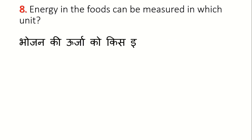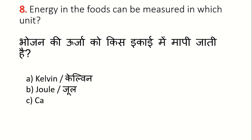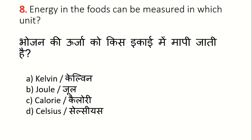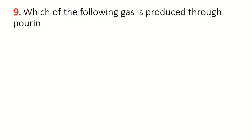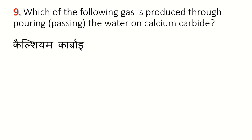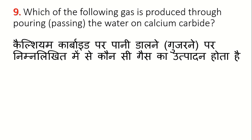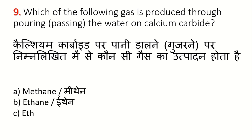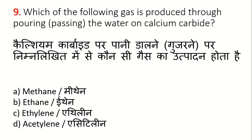Which of the following gases is produced by pouring or passing water on calcium carbide? Options are: A. Methane, B. Ethane, C. Ethylene, D. Acetylene. The correct answer is Option D: Acetylene.